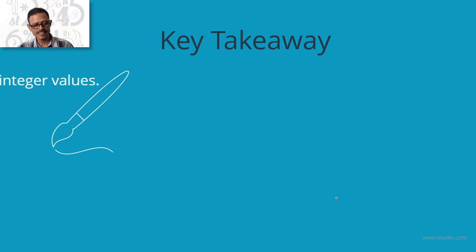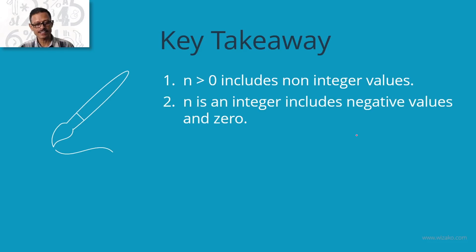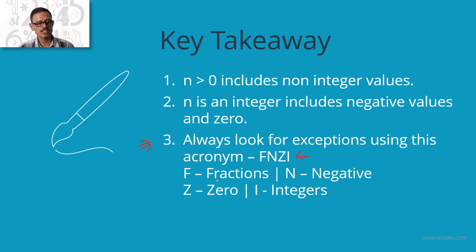Key takeaways: if a number is greater than 0, it can include non-integer values — do not ignore them. If n is an integer, it could include negative values and zero. Always look for exceptions using the acronym FNZI: F stands for fractions, N for negative values, Z for zero, and I for integers. Use FNZI to find counterexamples whenever you evaluate a statement.